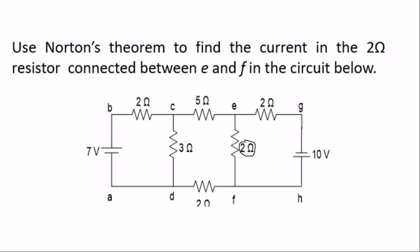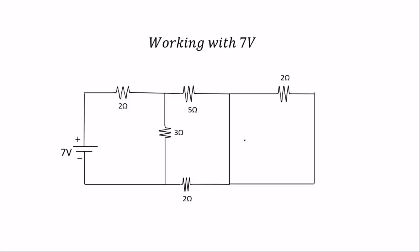Now we are going to work with the 7 volt source. This is the 7 volt source and this is where the Norton's current comes in. The Norton's current is here and the current moving here will be i1. Now let's analyze this. First we need to find the total resistance. When you short-circuit the source, these 2 ohm resistors will be short-circuited.